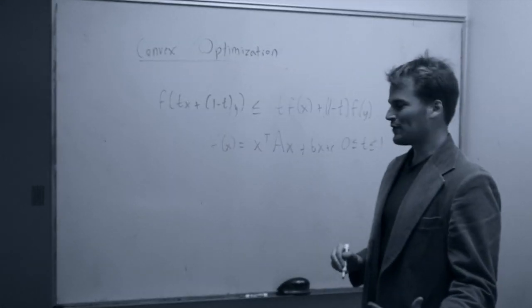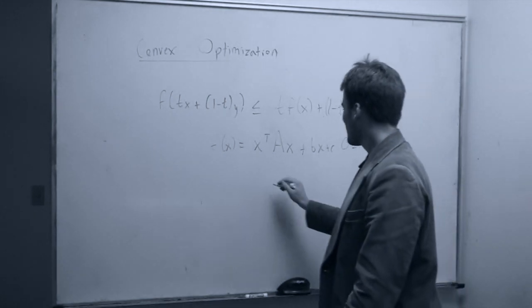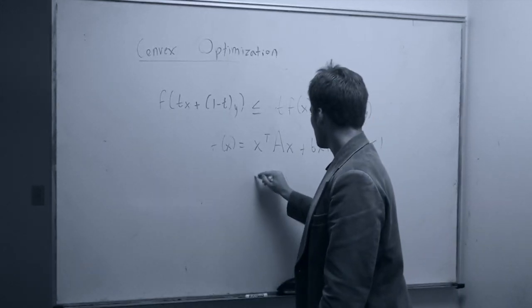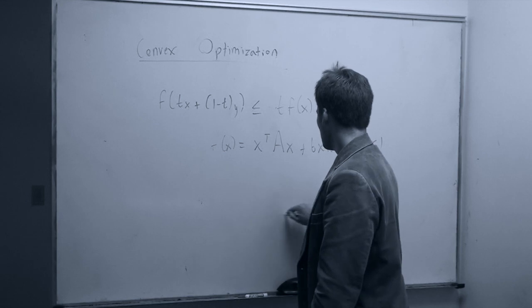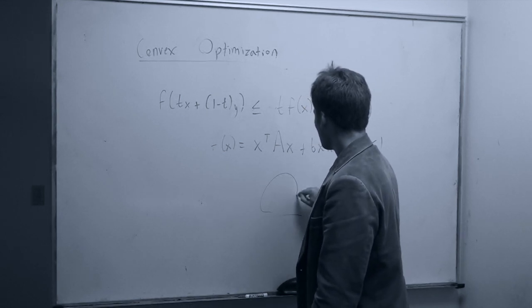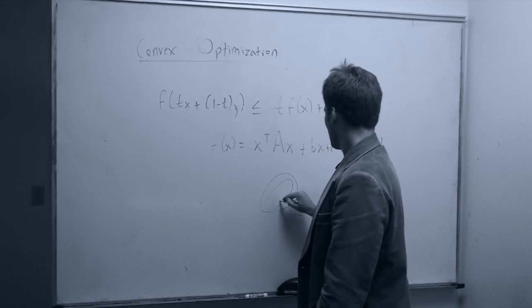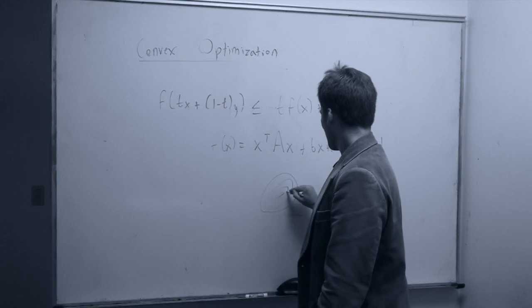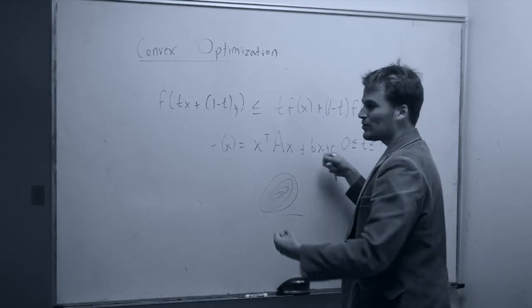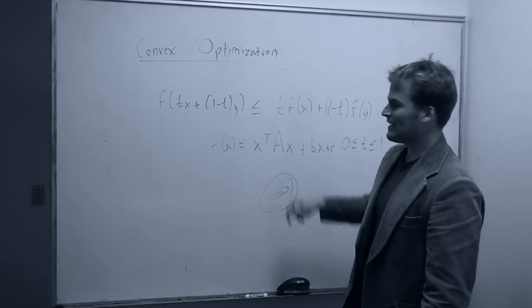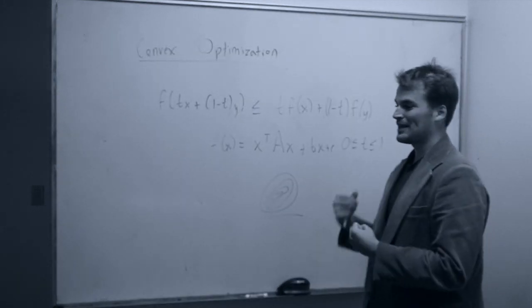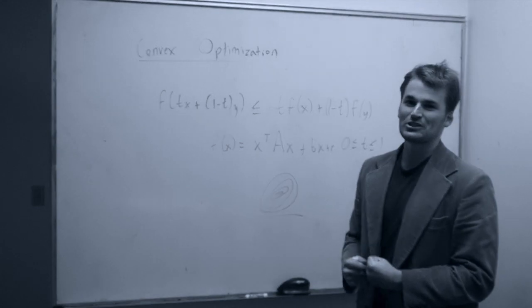Now to give you some intuition for this, I'm going to draw the level sets. In this coordinate system, the quadratic bowl has a level set like an ellipsoid. The ellipsoid corresponds to the eigenvectors of A. I hope that gives you some good intuition, because we're about to dive deep into convex optimization.